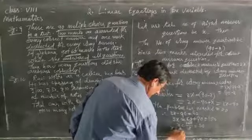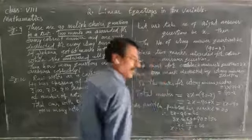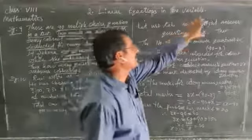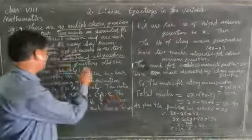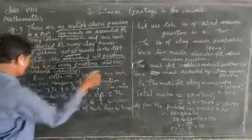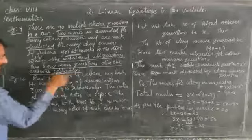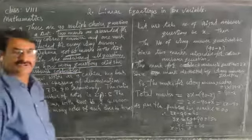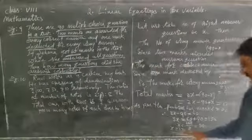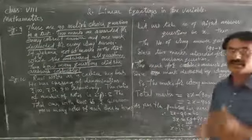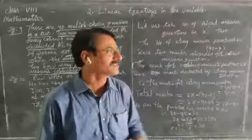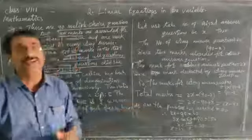X is the number of right answer questions. The question is: how many questions did she answer correctly? She answered 50 questions correctly — she gave the right answer for 50 questions only.